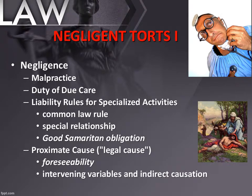When discussing foreseeability or proximate cause, we also talk about intervening and indirect causation. A is the independent variable, B is the intervening variable, and C is the dependent variable. A does not directly cause C — it is indirect causation through B. A causes B, which in turn causes C, making it a proximate link rather than a direct causal link. A direct causal link is actual harm; an indirect causal link is proximate harm.